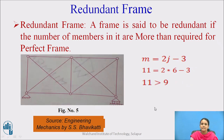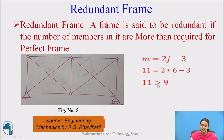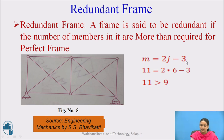A redundant frame has more members than required for a perfect frame. For example, with 6 joints and 11 members, 2j − 3 = 9, but m = 11, which is more than required. In summary: m = 2j − 3 gives a perfect frame; m less than 2j − 3 gives a deficient frame; m greater than 2j − 3 gives a redundant frame.